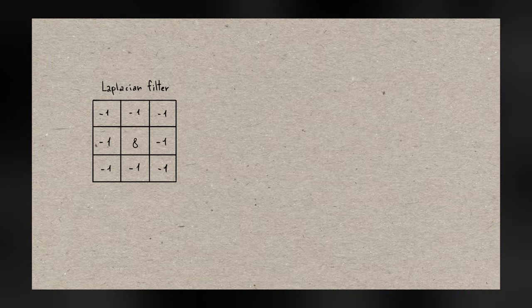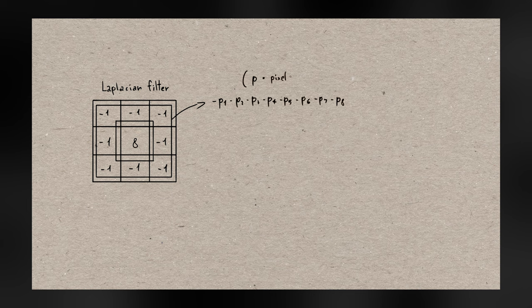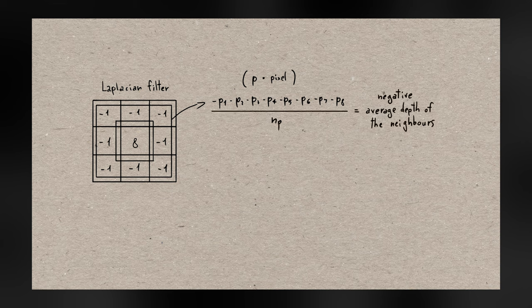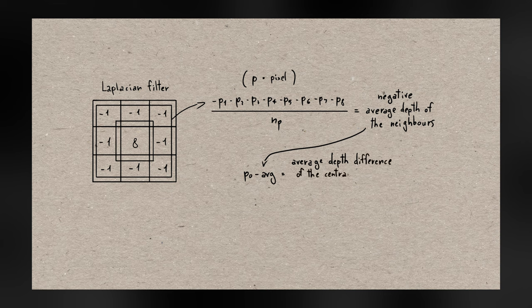If we separate the neighbors' weights from the central one, we notice that all neighbors are equally weighted and summed — the first step to calculate an average. Dividing the result by the number of neighbors, 8, gives the average depth of the neighbor pixels. Adding this average to the depth of the middle pixel gives the average distance of the evaluated pixel from its neighbors, which finally gives a meaningful interpretation to the filter output.